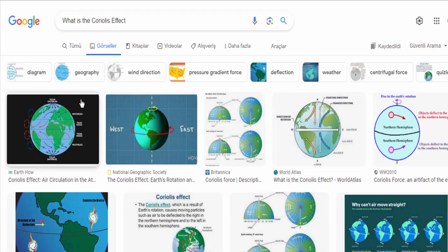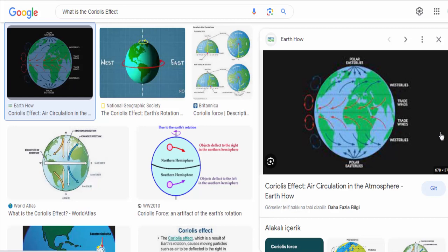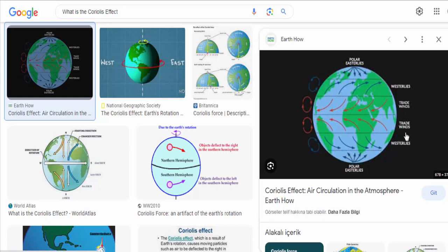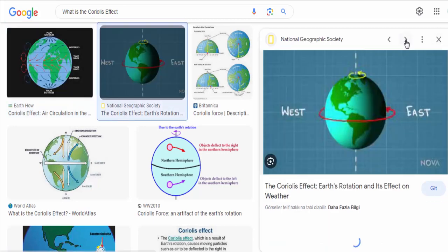The Coriolis effect is a phenomenon that occurs due to the rotation of the Earth. It influences the movement of objects or fluids, such as air or water, across the Earth's surface.